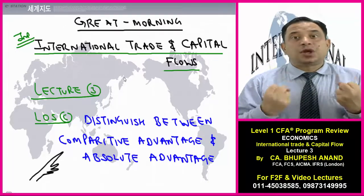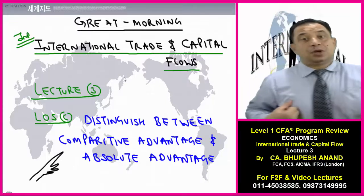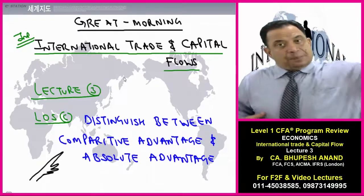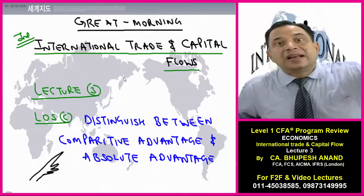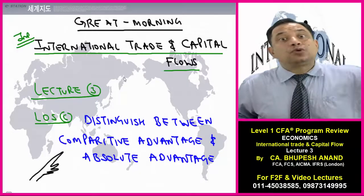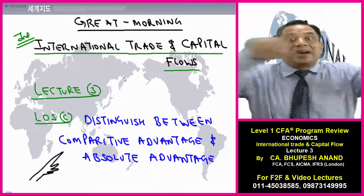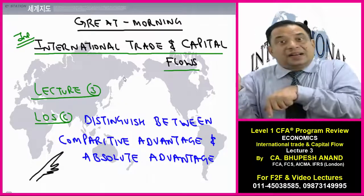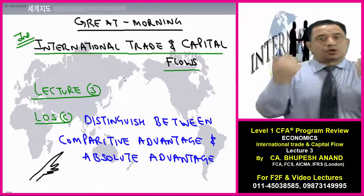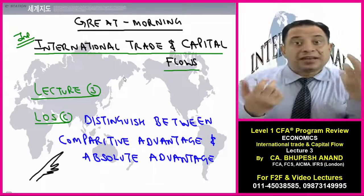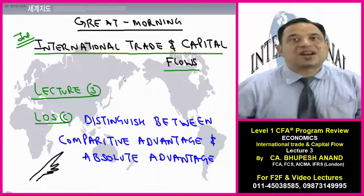I want to find out which village or which country should produce oranges and which should produce apples. No doubt a country can produce both, but because of the quality of the soil, it is better that they produce oranges because the production of oranges is more per hectare. Similarly, if I compare per hectare of another country's production, with the help of resources and production units I can decide which product should be produced by which country.